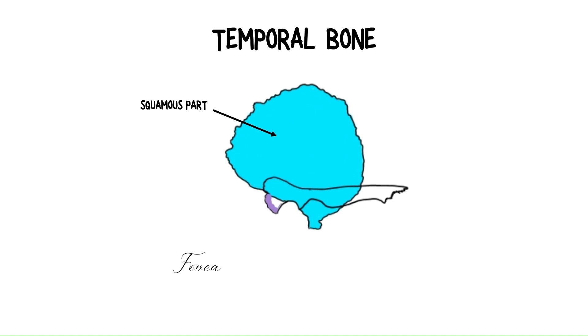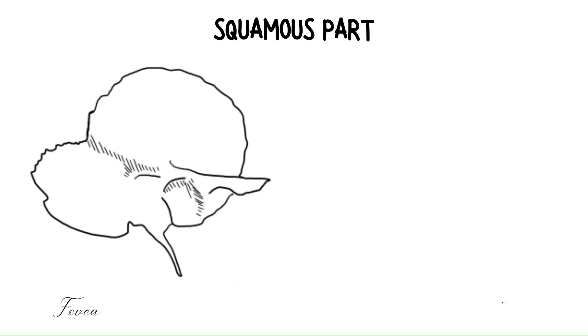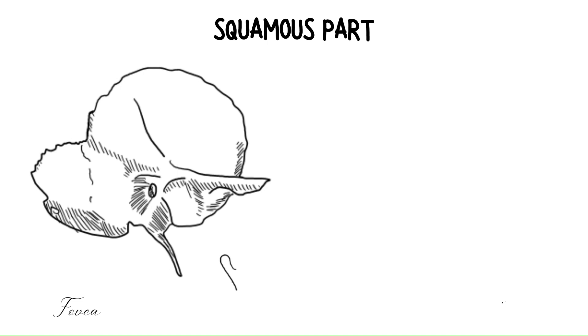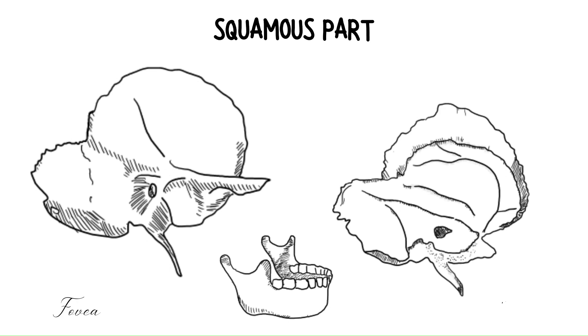The temporal bone consists of six parts: the squamous part, the zygomatic process, the mastoid and the petrous part — which together form the petromastoid part — the tympanic part, and the styloid process. The temporal bone houses various important structures, and a great deal of potential pathology can arise from temporal bone injury. Fortunately, it is one of the thickest bones in the body. The petrous part, also known as the petrous pyramid, is in fact the densest bone in the body and requires more than 1,800 pounds or 850 kilograms of force to fracture it.